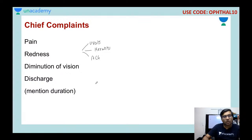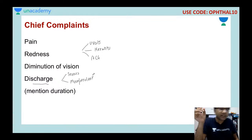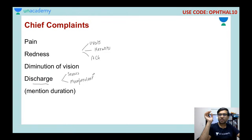When you mention discharge, the examiner will ask which type. Serous discharge is watery; mucoid discharge is thicker; mucopurulent discharge is more characteristic of bacterial infection. After listing the chief complaints, the next thing to write in your case sheet is the history of present illness, where you elaborate on your findings and chief complaints.